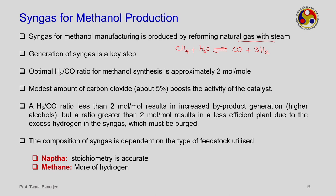The optimal H2 to CO ratio for methanol synthesis is approximately 2 moles per mole — 2 moles of hydrogen and 1 mole of CO. A modest amount of CO2, about 5%, is said to boost catalyst activity. An H2/CO ratio less than 2 results in increased by-product generation, while a ratio greater than 2 results in a less efficient plant due to excess hydrogen in the syngas which must be purged.